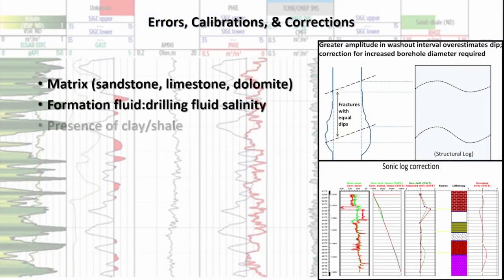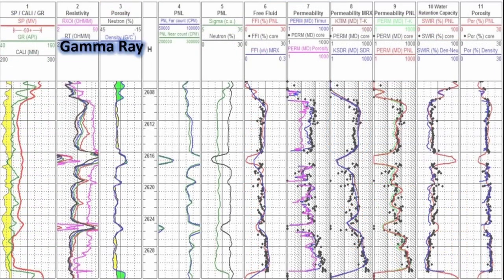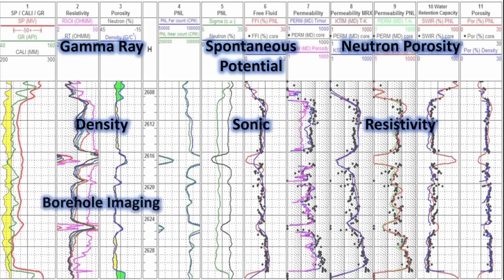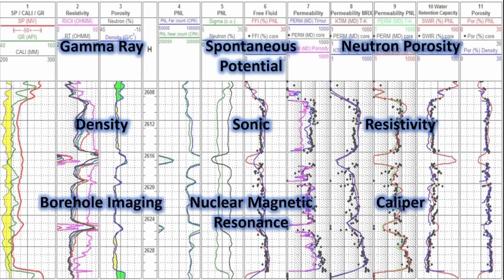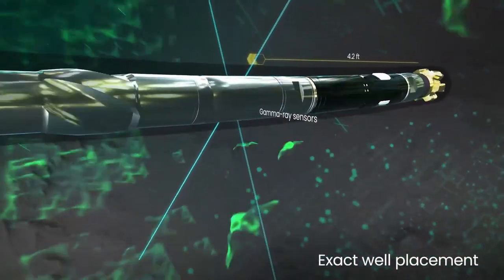All of these instruments require a high level of consideration for environmental conditions that can affect the readings. Typical causes for error must be considered so the proper calibrations and corrections can be made. It's important to remember that most of these tools are meant to be used in conjunction to obtain a complete view of the formation. All these instruments have faults, and failure to identify them can lead to misinterpretation of the data. Therefore, the true interpretation of these logs requires a team of geophysicists with deep understanding of how these formation characteristics are interconnected.